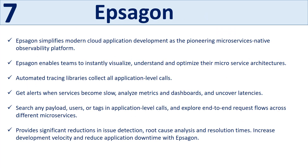The seventh tool is Epsagon. Epsagon simplifies modern cloud application development as a pioneering microservices-native observability platform, enabling teams to instantly visualize, understand, and optimize their microservice architectures. Automated tracing libraries collect all application-level calls. It provides alerts when services become slow, analyzes metrics and dashboards, uncovers latencies, searches any payload, users, or tags in application-level calls, and explores end-to-end request flows across different microservices — providing significant reductions in issue detection, root cause analysis, and resolution times, while increasing development velocity and reducing application downtime.